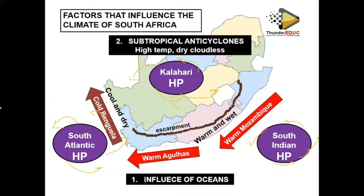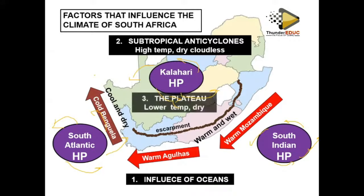The South Atlantic and the South Indian move vertically — they move north and south, to and from the equator — because they move with the apparent movement of the sun. So when it is winter in the southern hemisphere, these high pressure systems move close to South Africa, and when it is summer they move southwards and far away from South Africa.